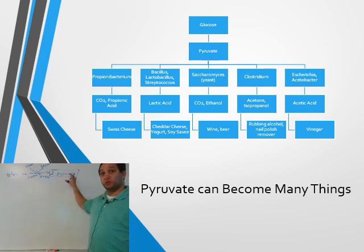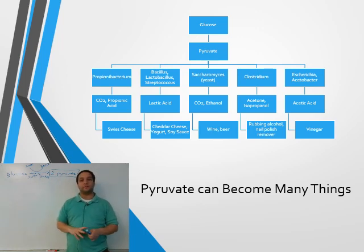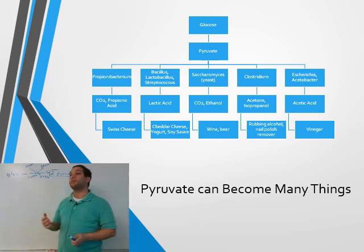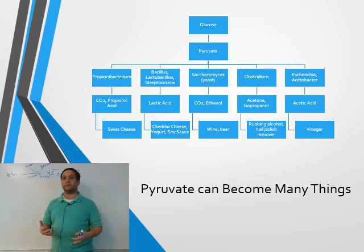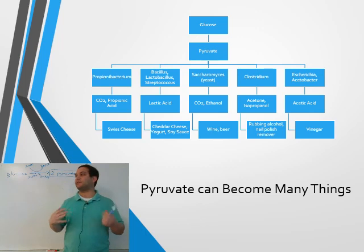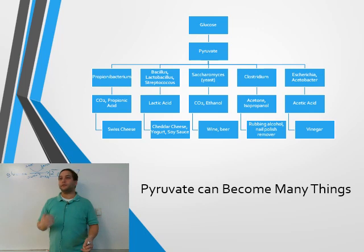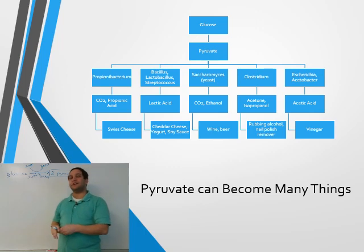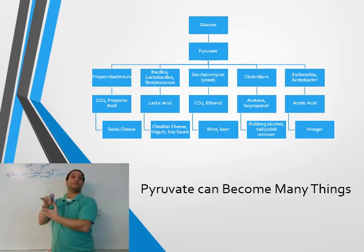That pyruvate for the next step can go on to become lots of different things. If it was exposed to a propionibacterium, you end up producing propionic acid and carbon dioxide - that's what gives Swiss cheese its bite. Most cheeses and fermented things we have are made because of interactions with microorganisms. The holes in Swiss cheese are caused by bubbles of carbon dioxide - when you slice the cheese into a bubble, that's how you get a hole.